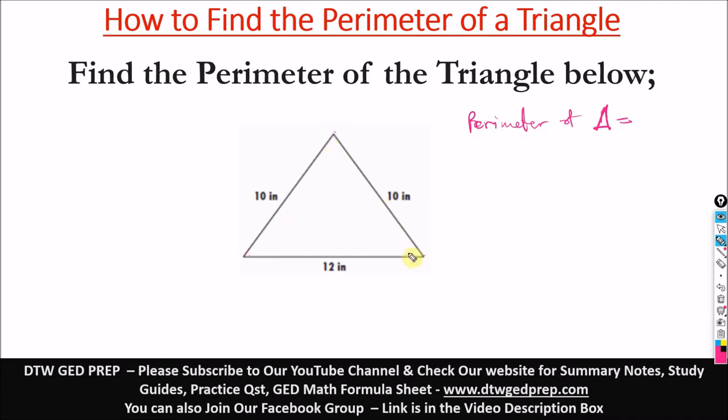this is 10 inch plus 10 plus 12. So we have 10 inch plus 10 inch, then plus 12 inch. And what would that give us? That would give us 20 and 20 plus 12, that would give us 32 inches. So that's the perimeter of this triangle.